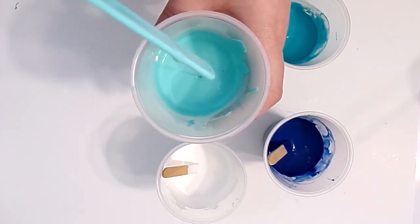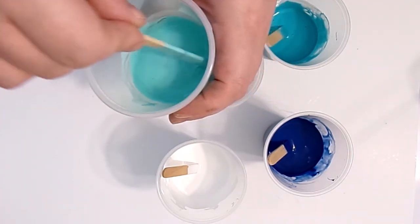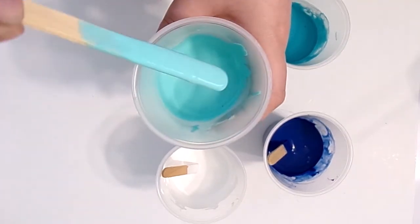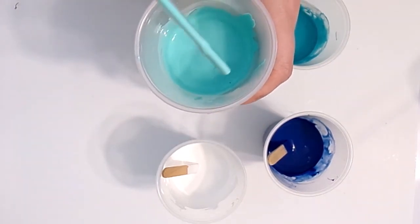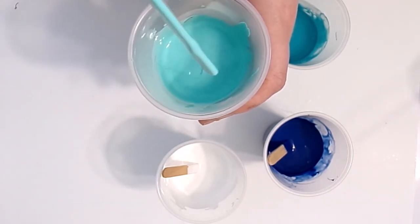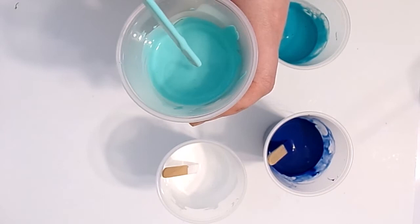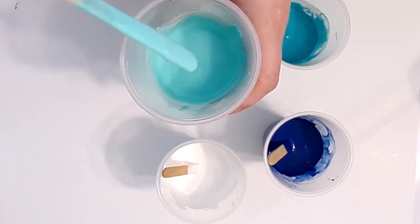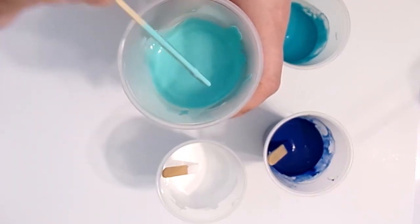You want to be able to pick your stick up with paint on it, let it flow off, and it flows into a steady stream. And when it falls across the top, you want to be able to see it for just a moment, lay across the top before it sinks down in. It kind of ribbons across the top.